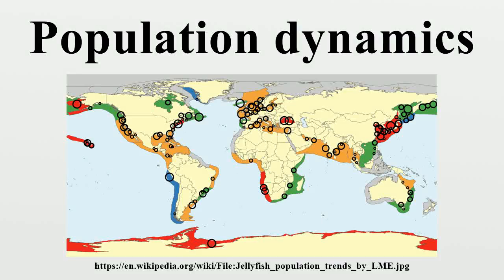Population dynamics is the branch of life sciences that studies the size and age composition of populations as dynamic systems, and the biological and environmental processes driving them. Example scenarios are aging populations, population growth, or population decline.